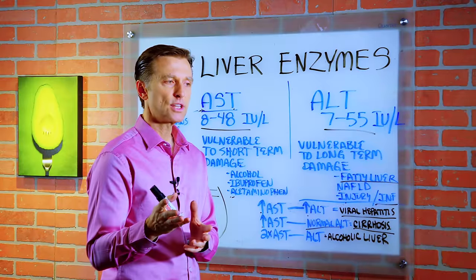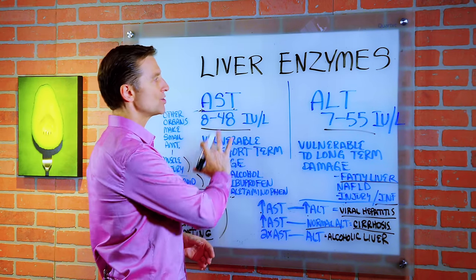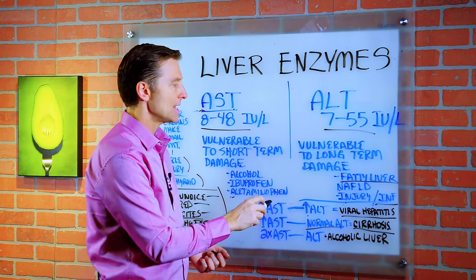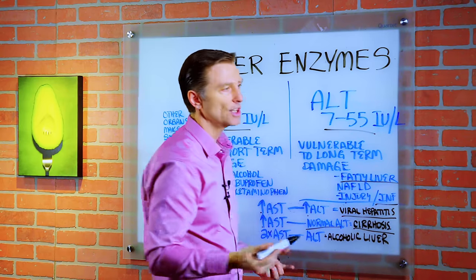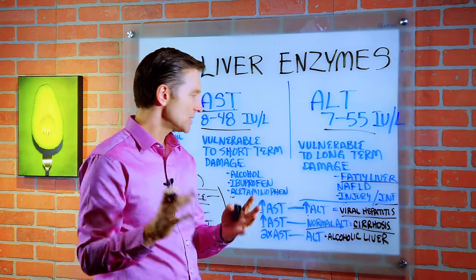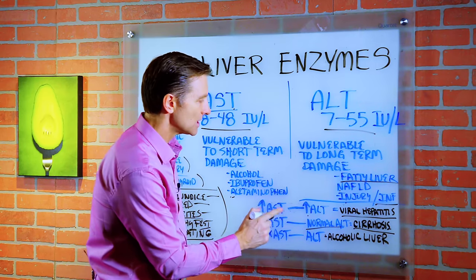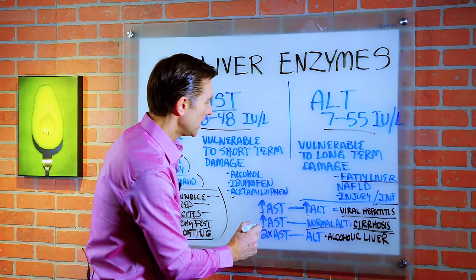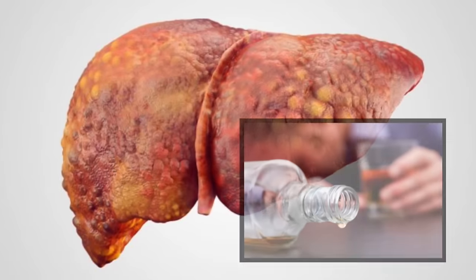There are a couple of things you can look at to get clues about what's going on — specifically the ratios of these two enzymes. If both AST and ALT are high, that could potentially be viral hepatitis, though you'd need other testing as well. If AST is high but ALT is normal, it could be cirrhosis. If AST is more than double your ALT, it could indicate an alcoholic liver.